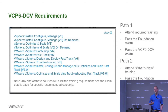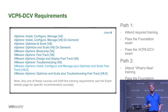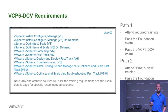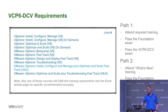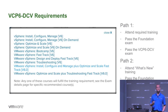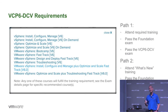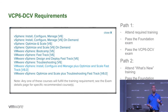For the VCP 6 DCV, with the VCP level exams there is an educational requirement. You need to take the Install, Configure, and Manage course, or another qualifying course such as the Optimize and Scale class. In order to get issued the VCP certification, your transcript needs both the passed test and that class. Once you get past that level, as long as you don't let your VCP expire — which is currently every two years — you can take any other tests without additional educational requirements.